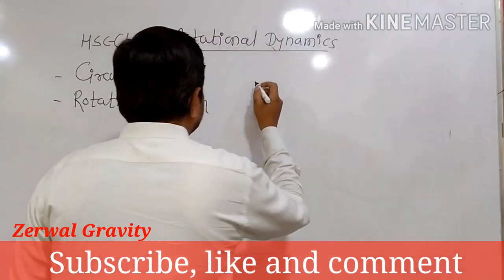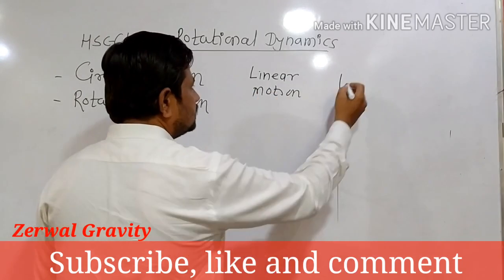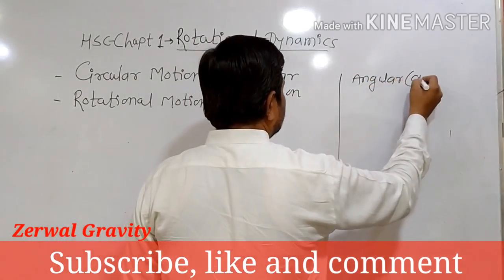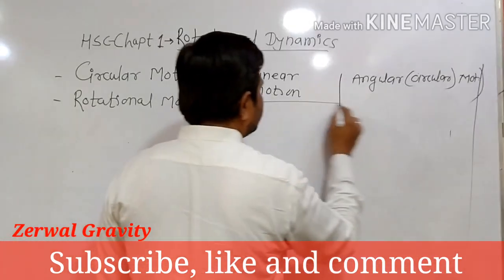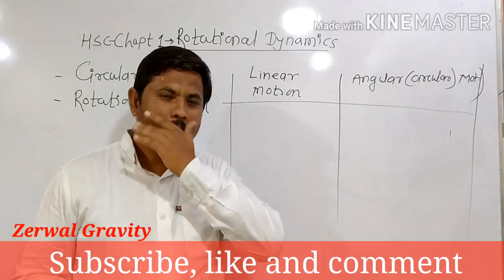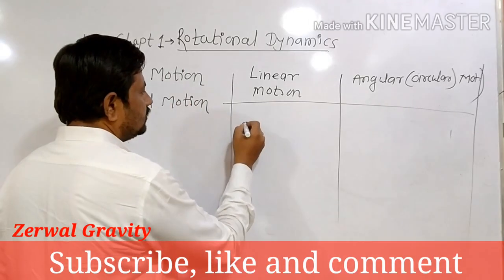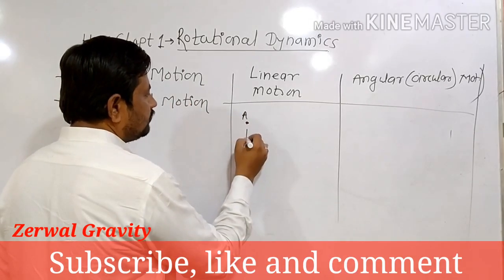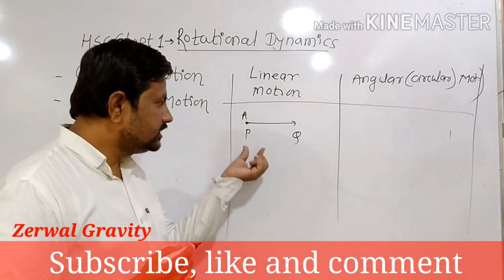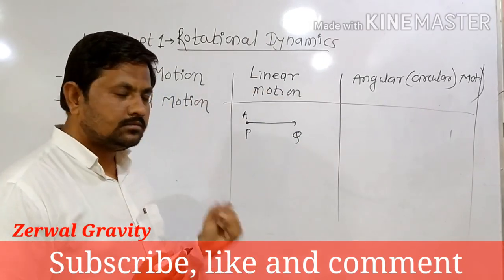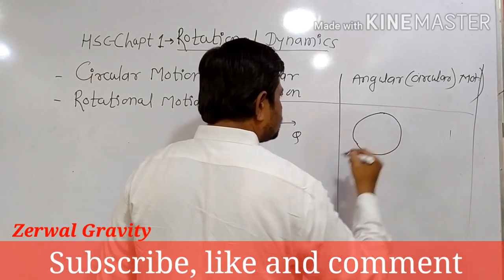To study circular motion, we first have to know the difference between two motions: linear motion and angular motion. Angular motion means circular motion. What is linear motion? When any object displaces from one point to another point in a straight line direction — for example, body A moves from point P to Q — that type of motion is called linear motion. But when a body moves in a circular path, that type of motion is called angular motion.